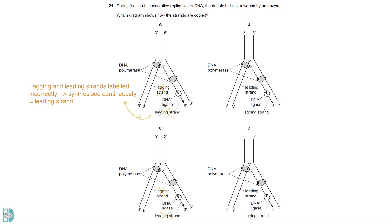A and C label the lagging and leading strands incorrectly. The one that is synthesized continuously is the leading strand. A and B show the direction of synthesis incorrectly. DNA is synthesized from the 5' to the 3' end.